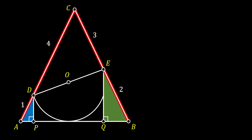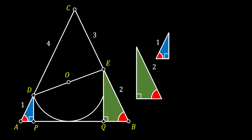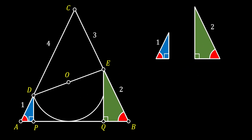This means that our triangle ABC is actually an isosceles triangle. That leads us to conclude that the angles at points B and A must be congruent as well.